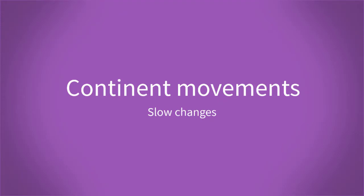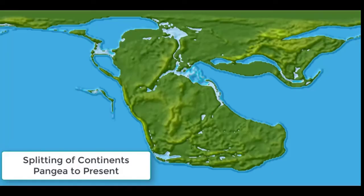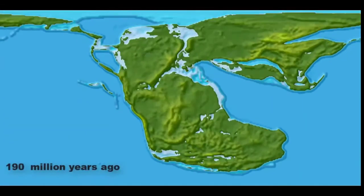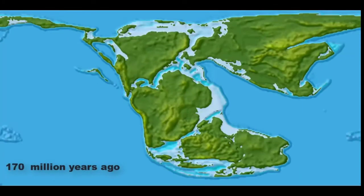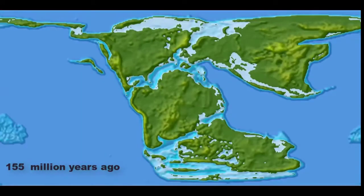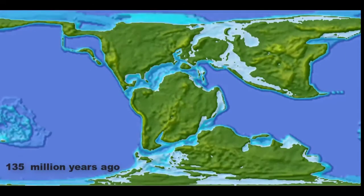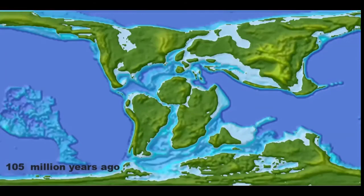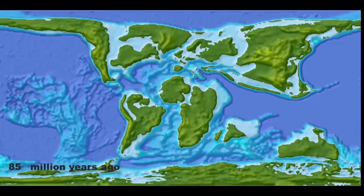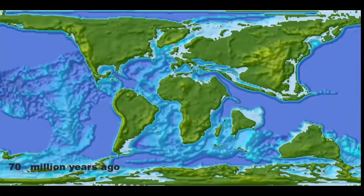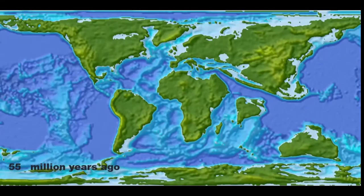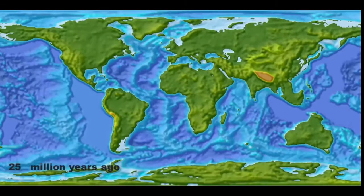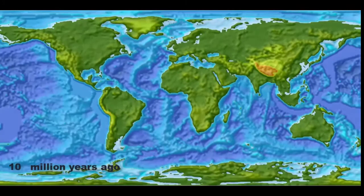Continents rest on massive slabs of rock called tectonic plates, so all continents are moving. These plates are always moving and interacting in a process called plate tectonics. The continents are still moving today, and this is a kind of slow change in the environment.